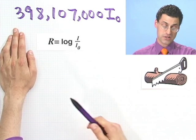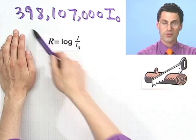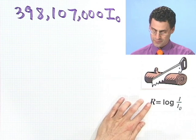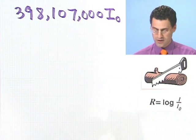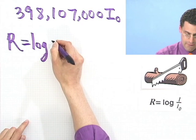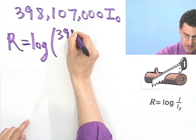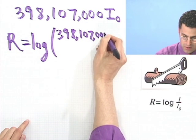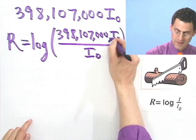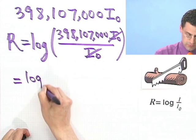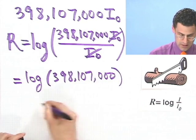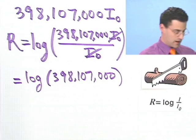Okay, well, even though I'm shaken, let's see if we can actually figure out the Richter scale measure for the earthquake we just had. All I've got to do is plug into this formula. So R equals log base 10 of I over I-0. The Richter scale for this one would be log of 398,107,000 times I-0, divided by I-0. The I-0 terms cancel, and so I just need the log of 398,107,000.